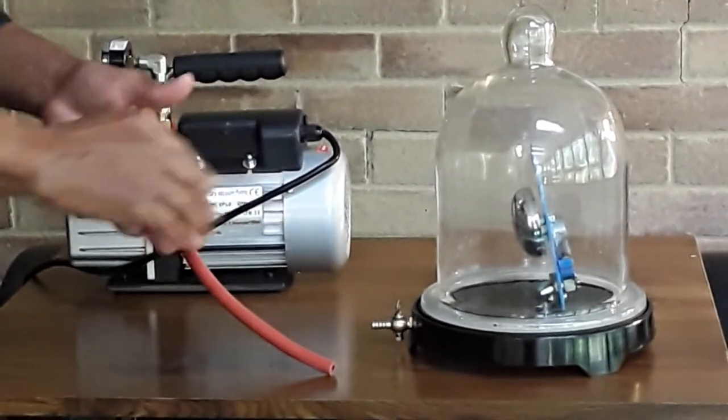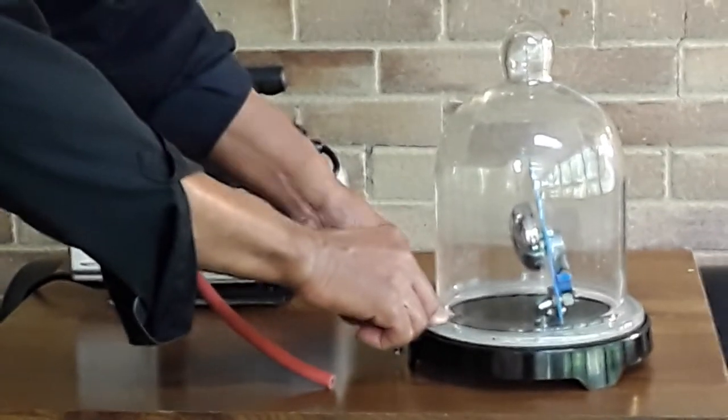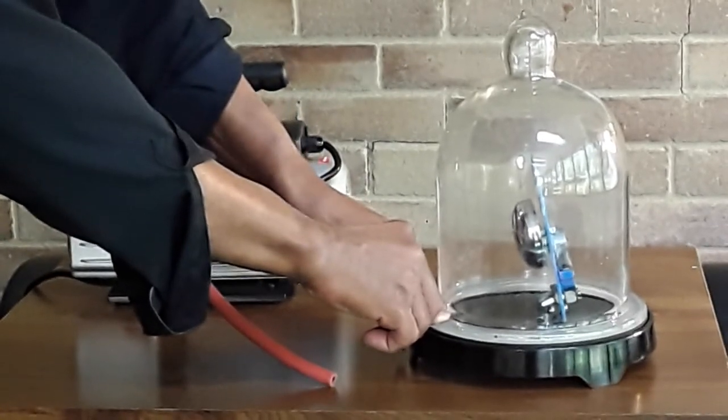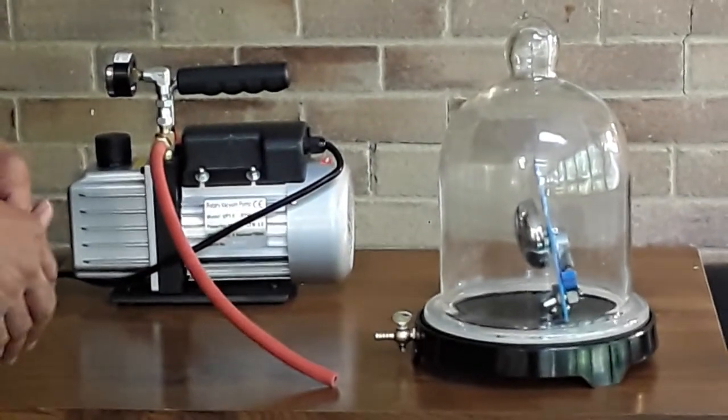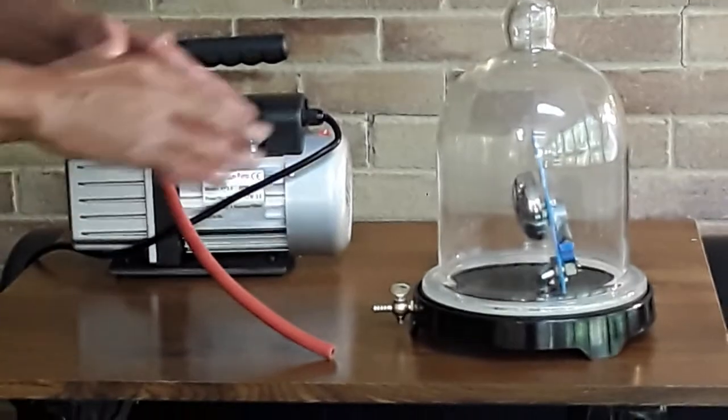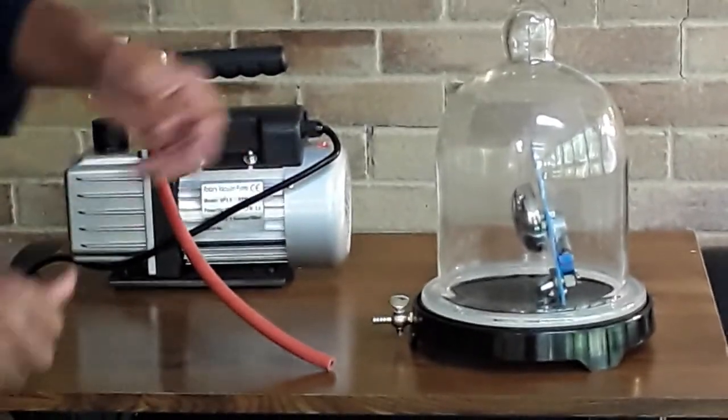Now let's put some air back into the system. So I'm going to open this valve here. Air is going back into the bell jar now. Pressure is equalized now inside and outside of this bell jar.